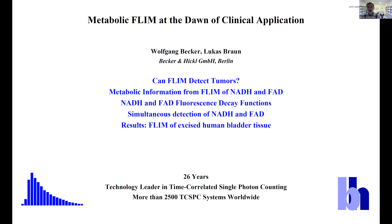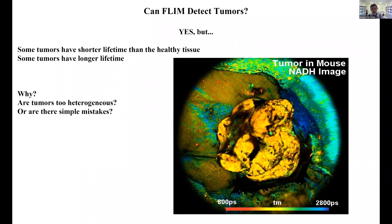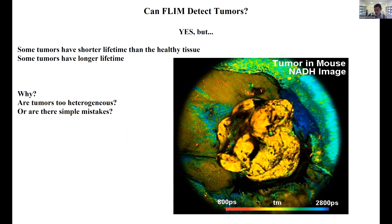If you ask people can FLIM detect tumors, you usually get the answer yes. On the right you see a beautiful image showing a tumor in a mouse recorded with one of our FLIM systems. You can see the tumor in the middle has a different lifetime than the surrounding tissue. But if people think they can detect tumors by FLIM, there are normally a lot of conditions and restrictions. Some say tumors may have shorter lifetimes, others say longer. There is no real consistency in these results, and the question is why — are tumors too heterogeneous, or are there simple mistakes?